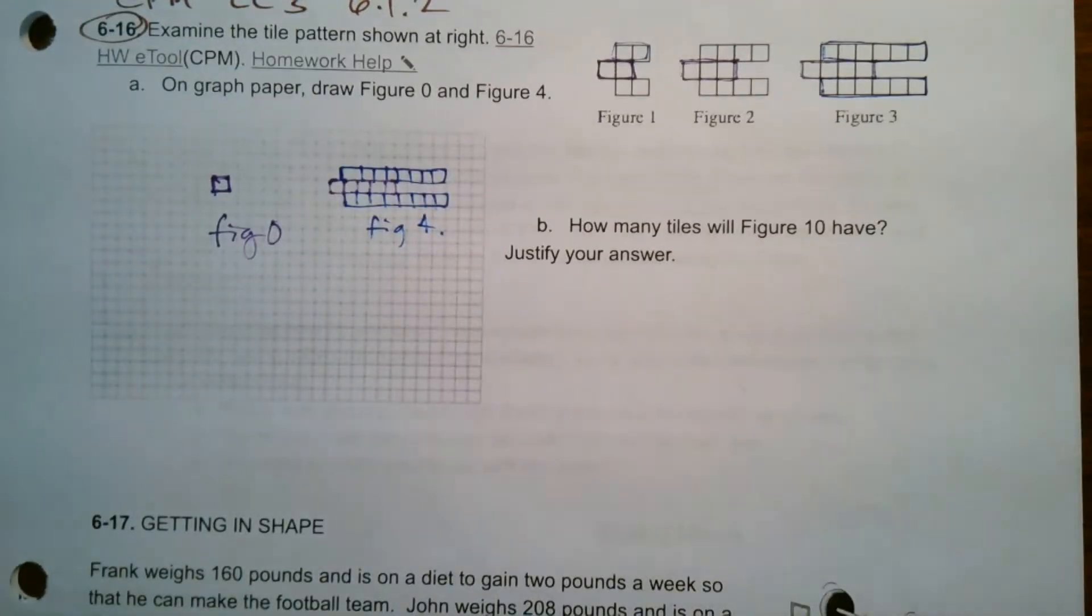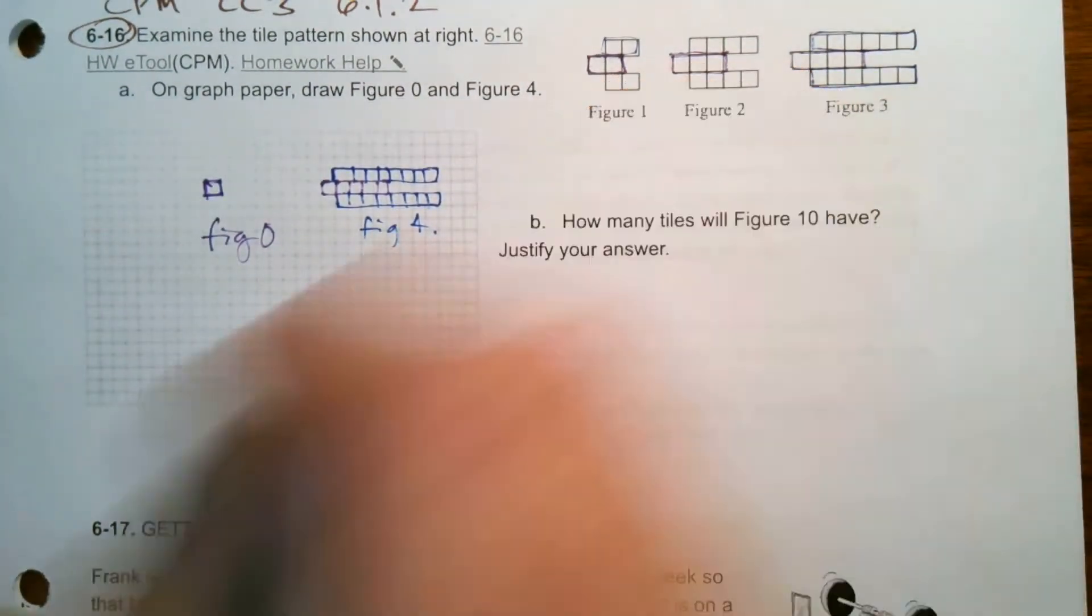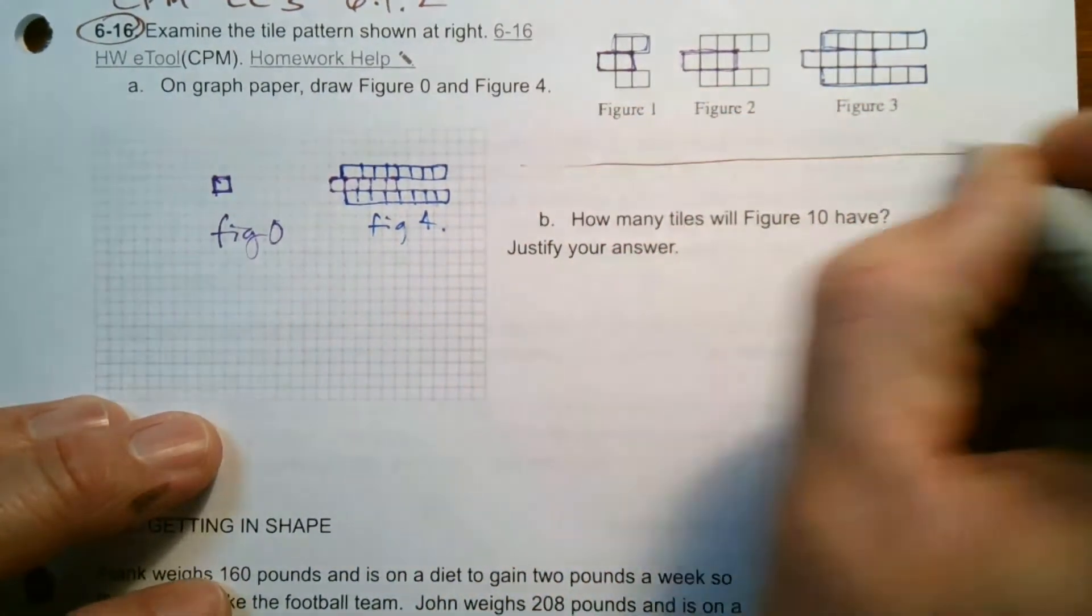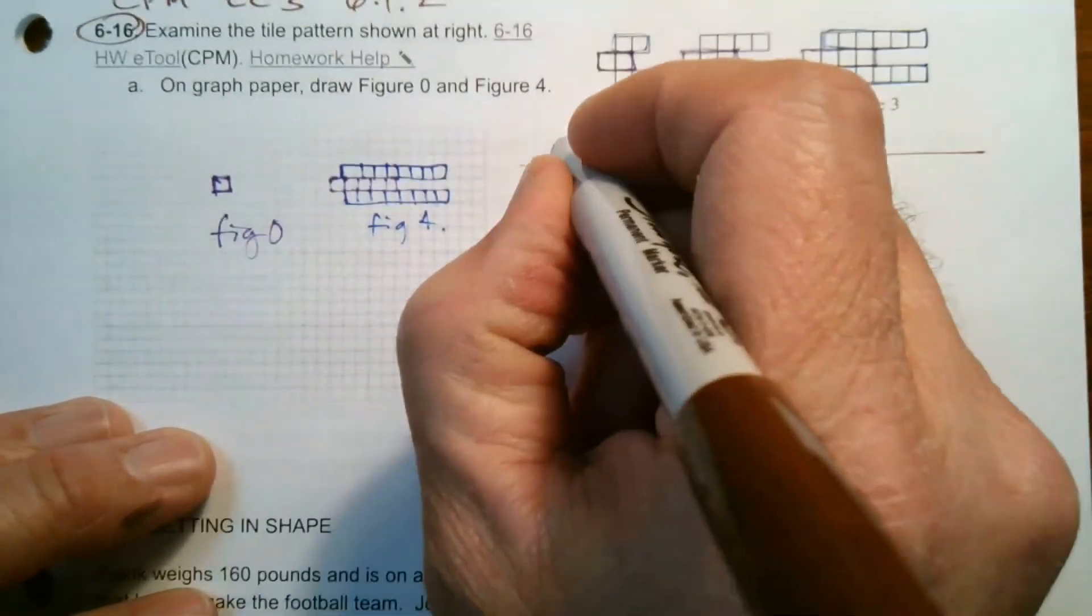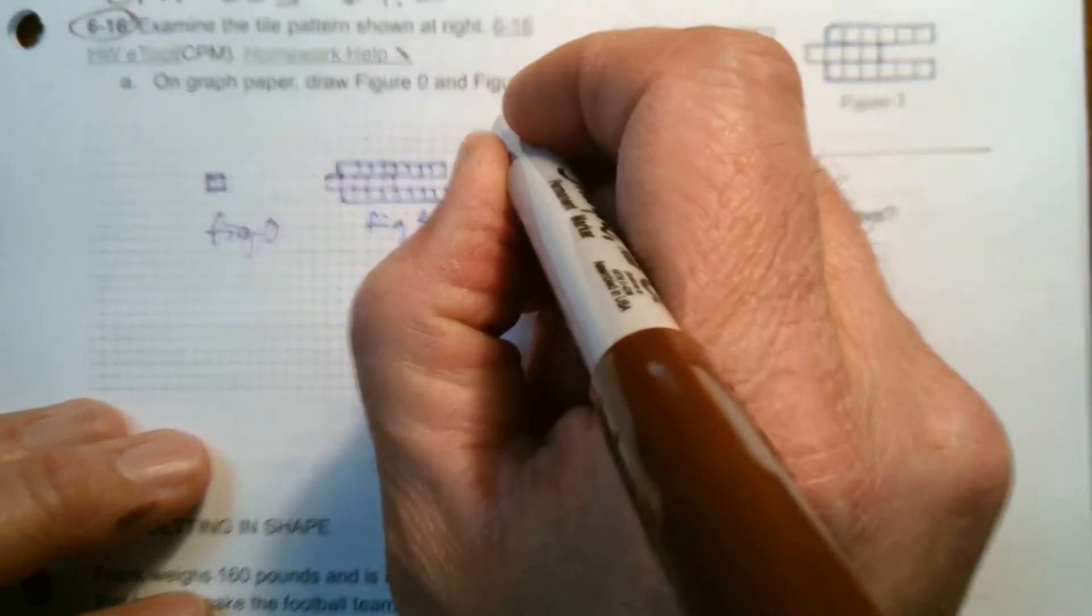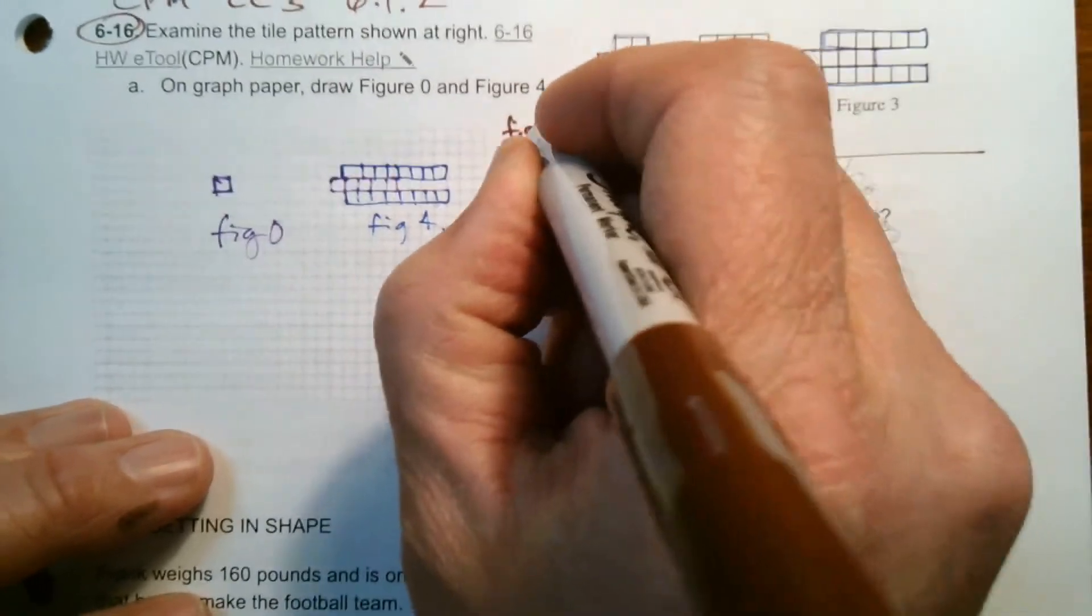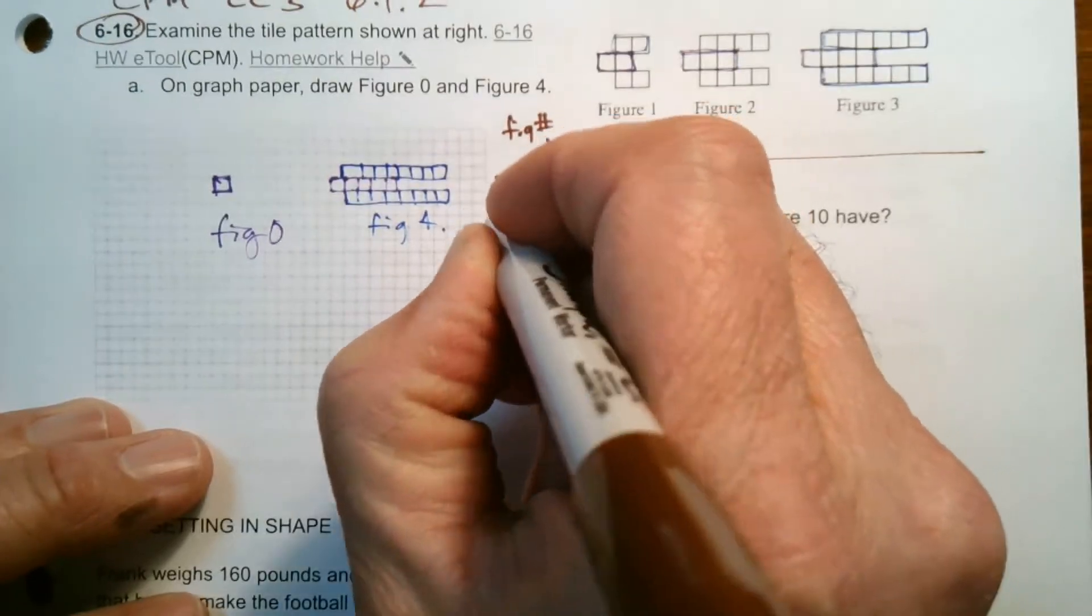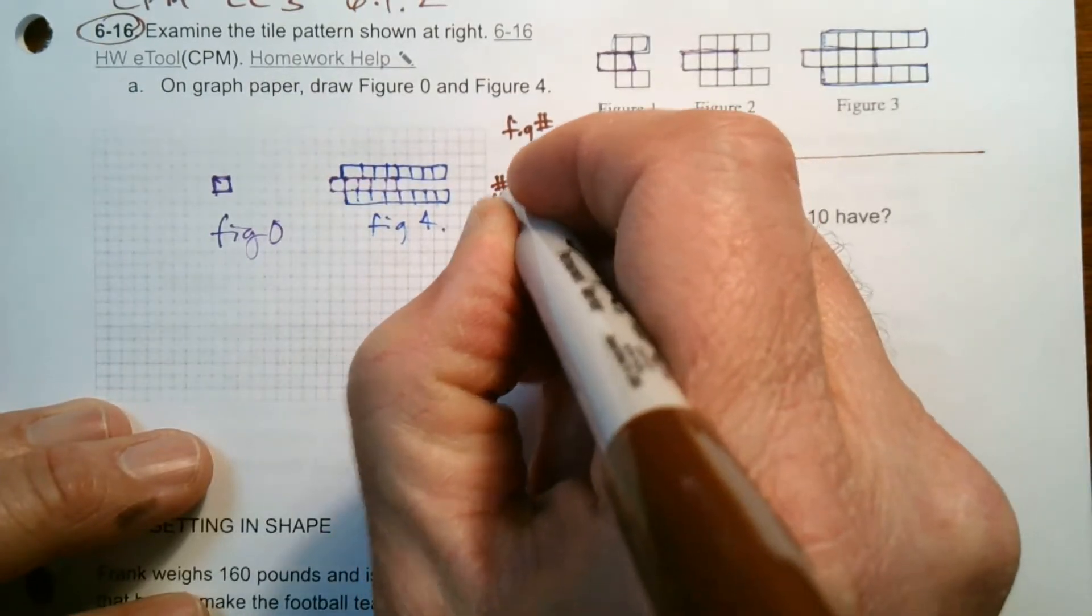The other way to determine this, we could have done the pattern by looking at it, or there's always building a table. Building a table is always a nice way to determine your pattern, knowing that your x is always your figure number and your y is always the number of tiles in each figure.